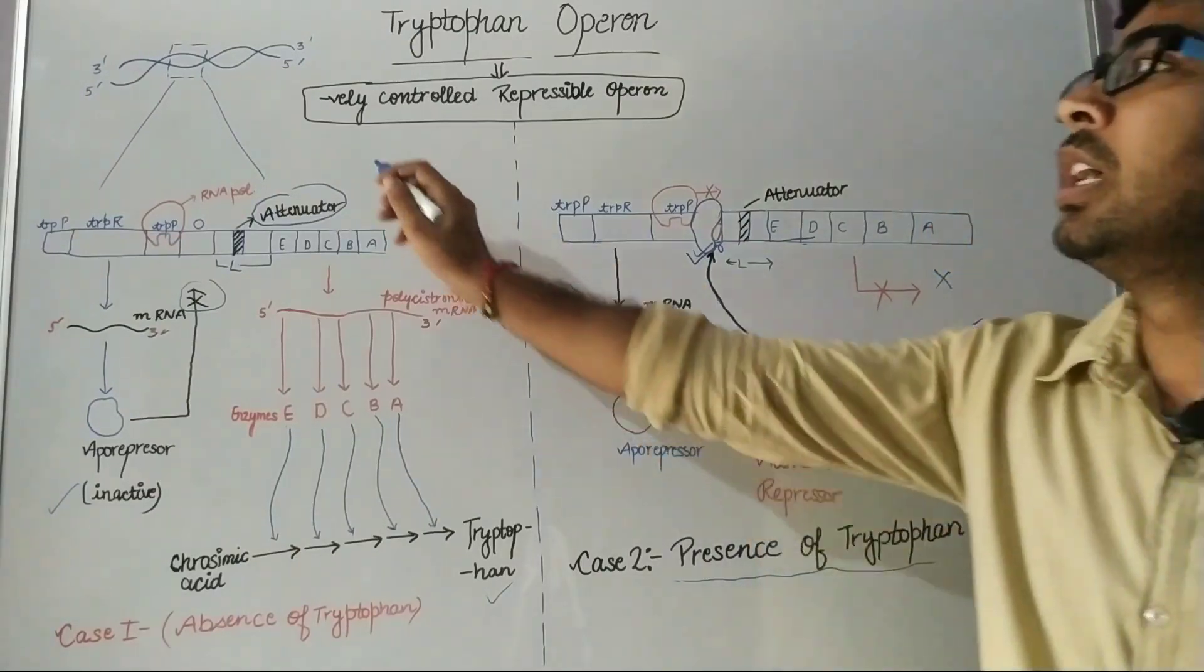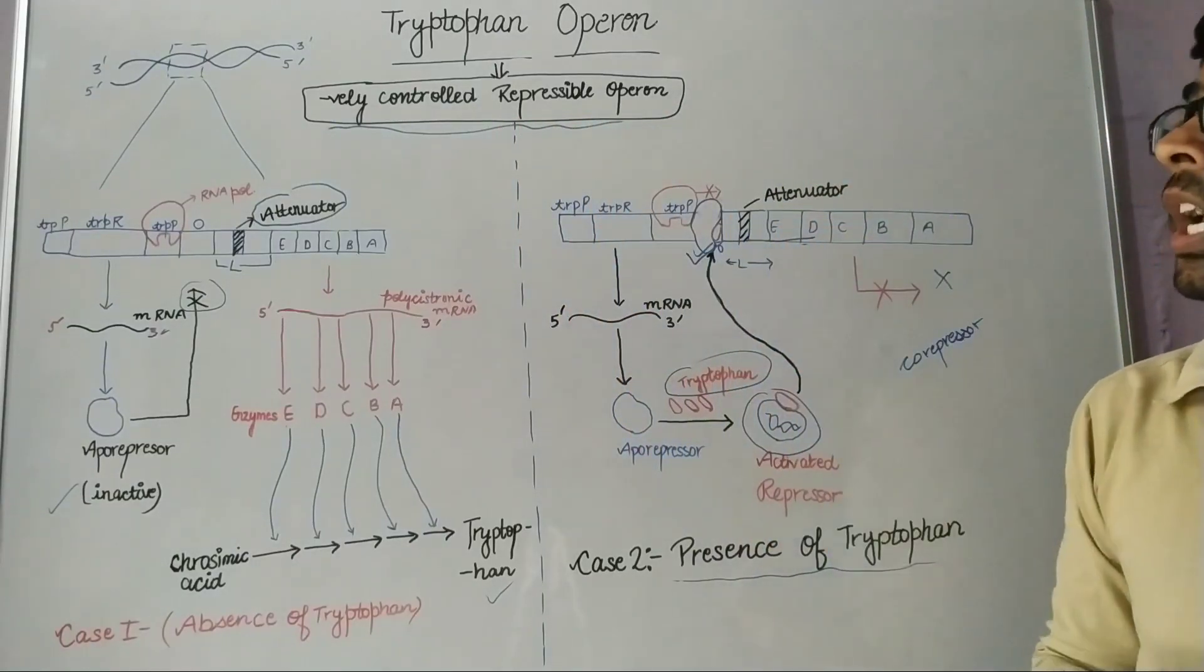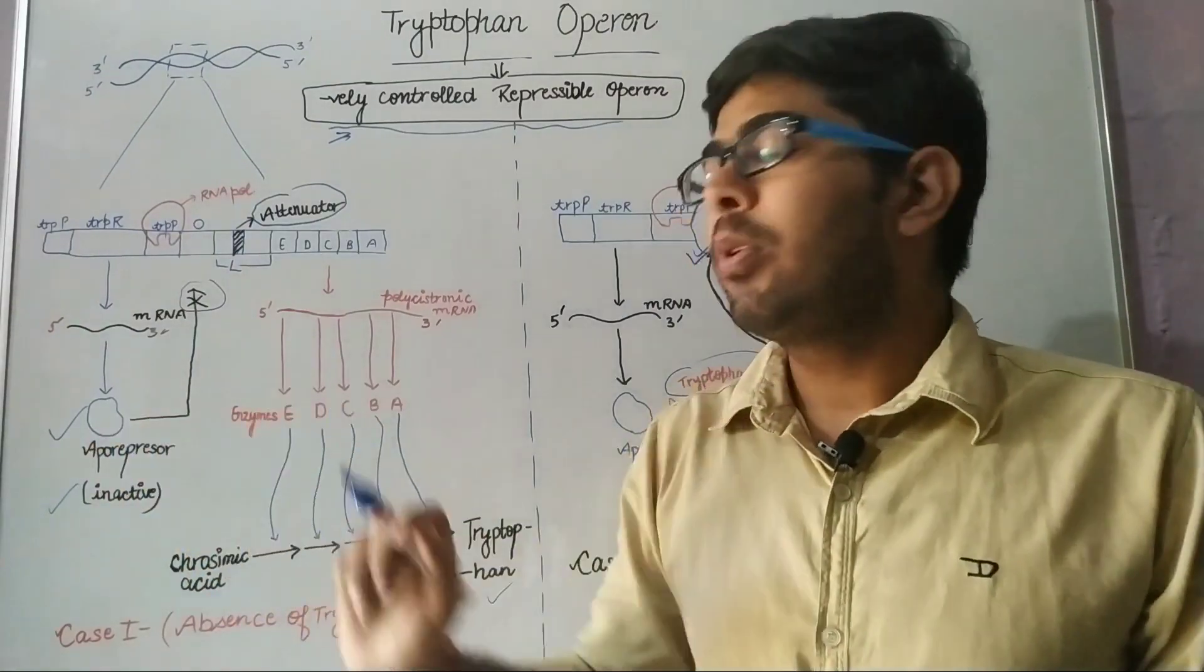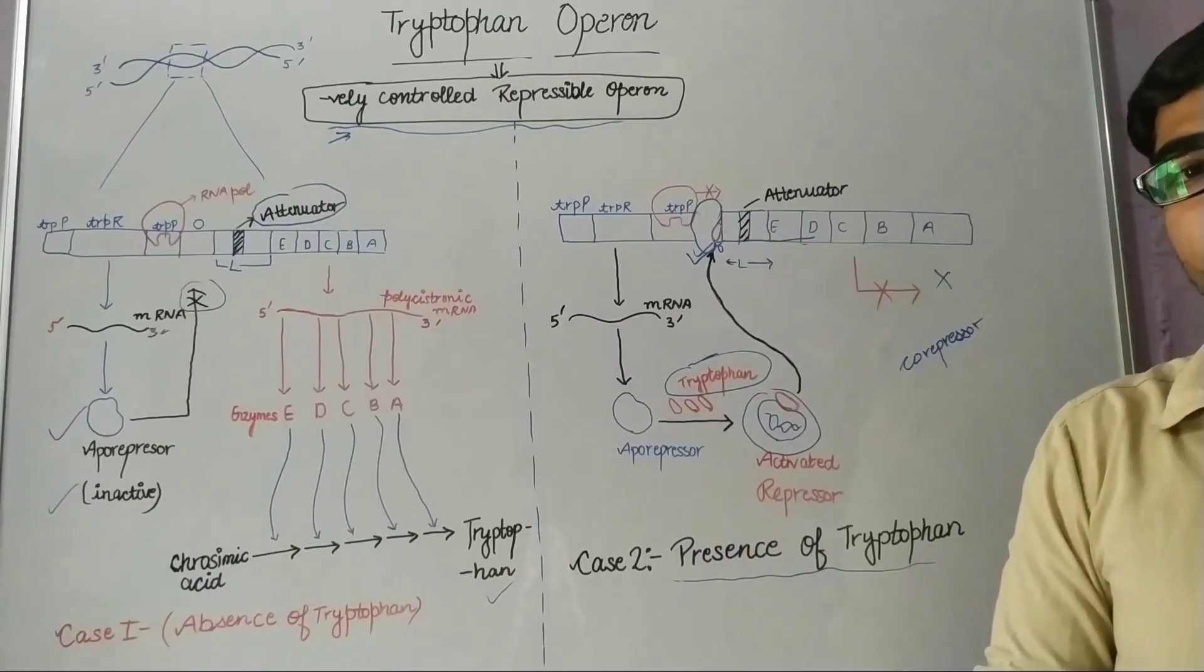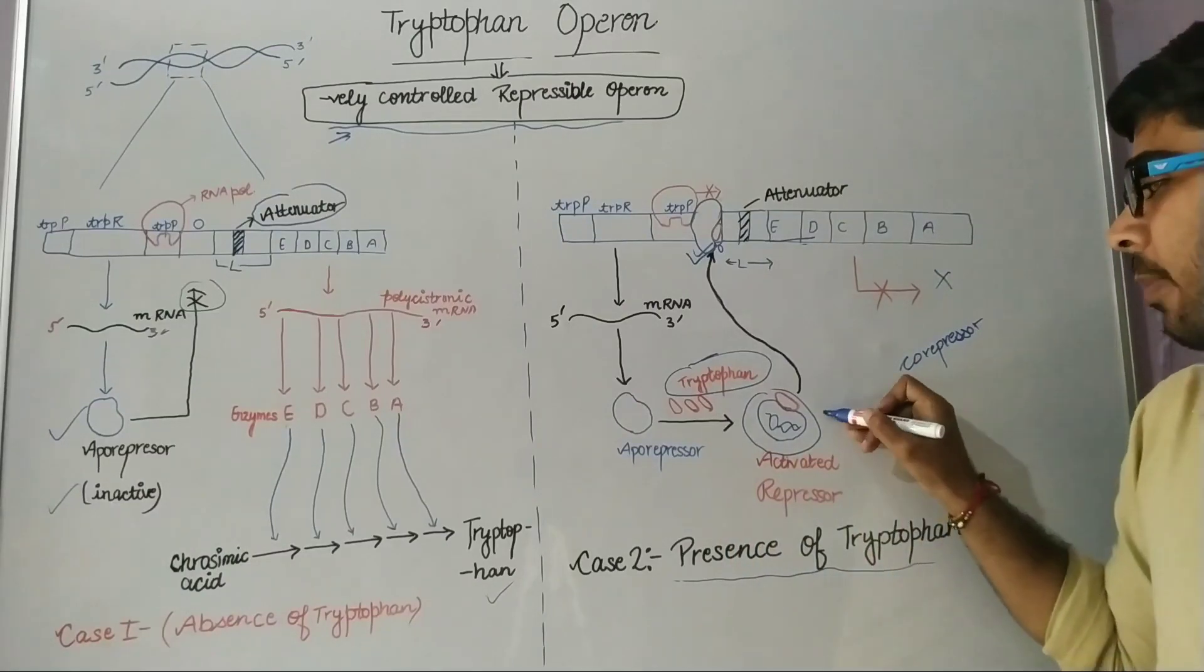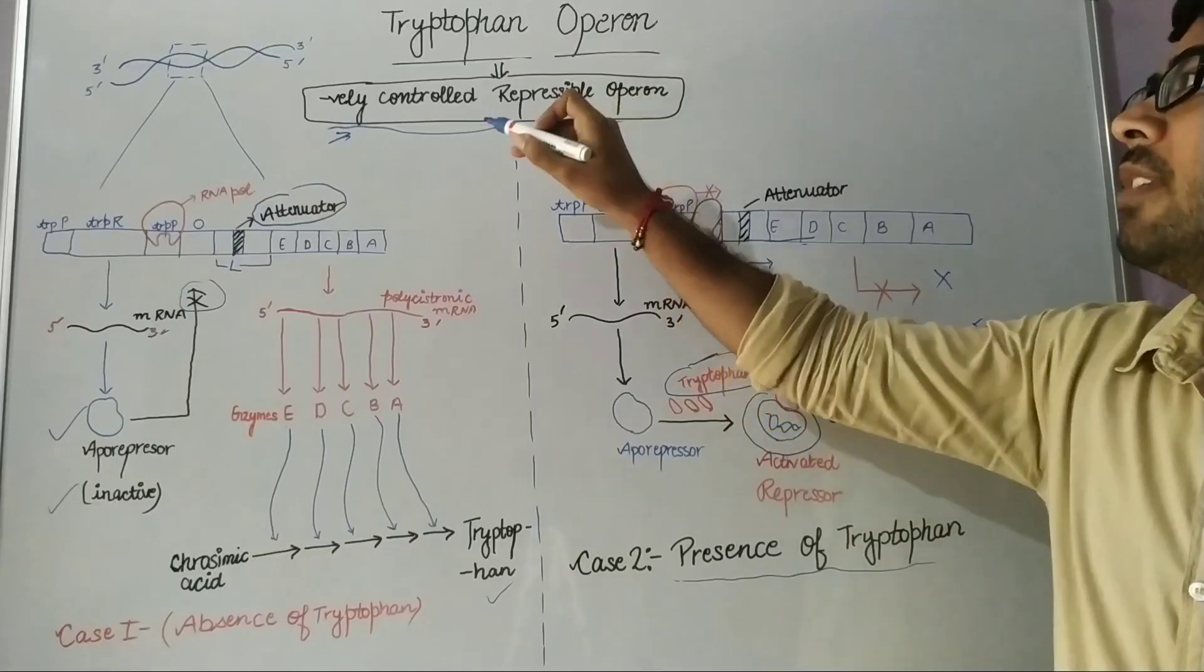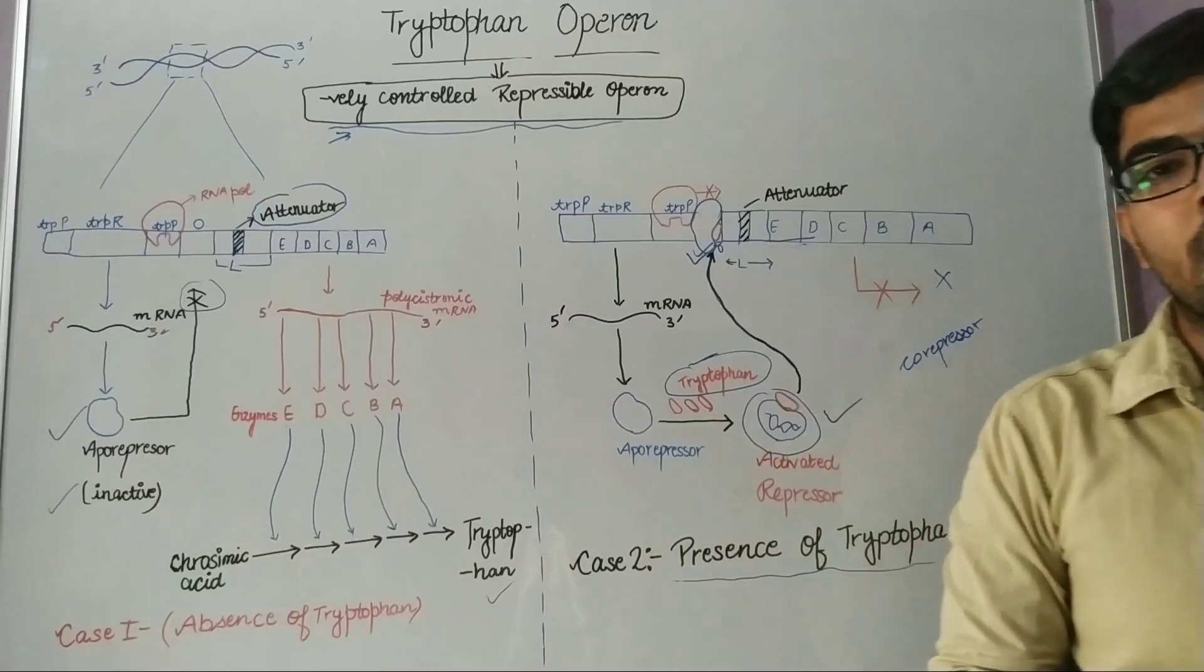Now I will tell you about the attenuator sequence in my next video, which is very important regarding the CSIR point of view. This is a negatively controlled repressible operon because it encodes a repressible mediator. In this case, it is aporepressor. When an effector molecule or corepressor is present, this will activate the repressor protein and inhibit the expression of operon genes.